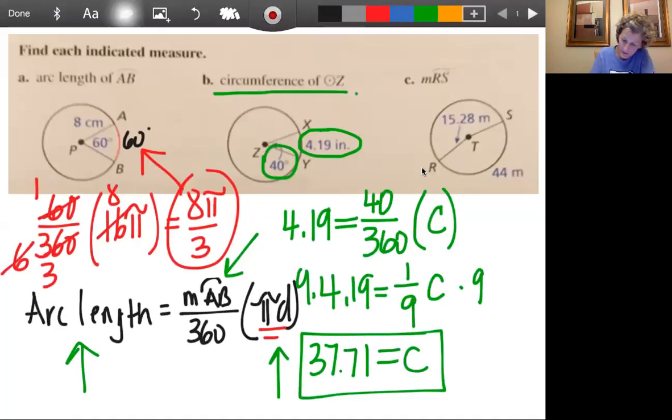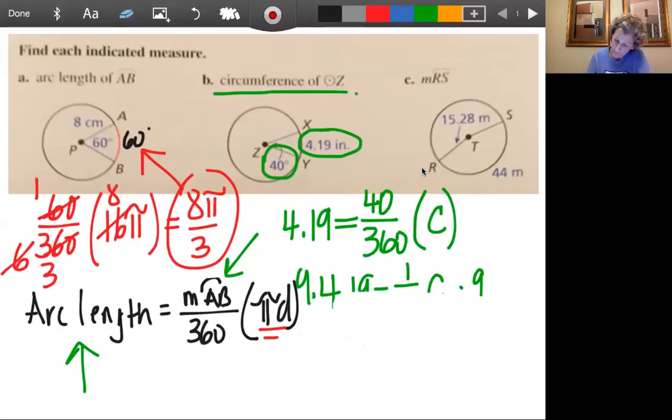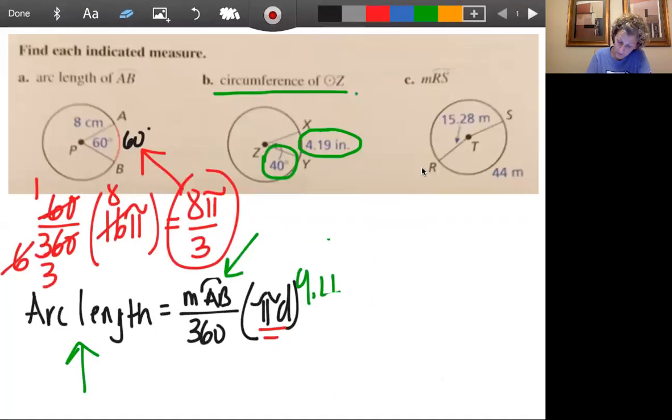Let's go ahead and erase that and do this last one. Okay. This time we're going to be looking for, let's go with blue, the measure of the arc RS, the measure this time. Okay. Again, here's our formula. And what we have right now is it looks like we have the radius and it looks like we have the arc length. So let's plug it in here.